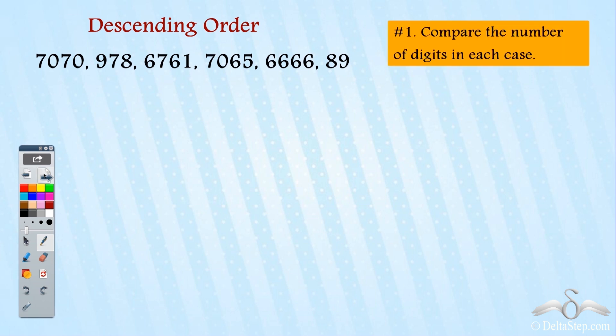What was the first trick or the first rule? The first rule is that we need to compare the number of digits in each case. So let us find the number of digits in each case and compare them.